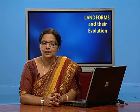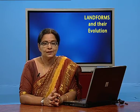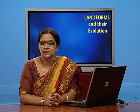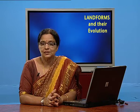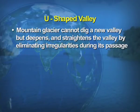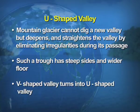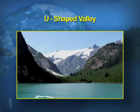We take up another feature — the U-shaped valley. You may remember that when discussing the work of the river, we discussed the V-shaped valley formed by the river. Here, by the glacier or moving ice, the V gets converted into a U. The mountain glacier deepens and straightens the valley by eliminating irregularities during its passage. Such a trough has steep sides and a wider floor. The V-shaped valley formed by the river thus turns into a U-shaped valley.